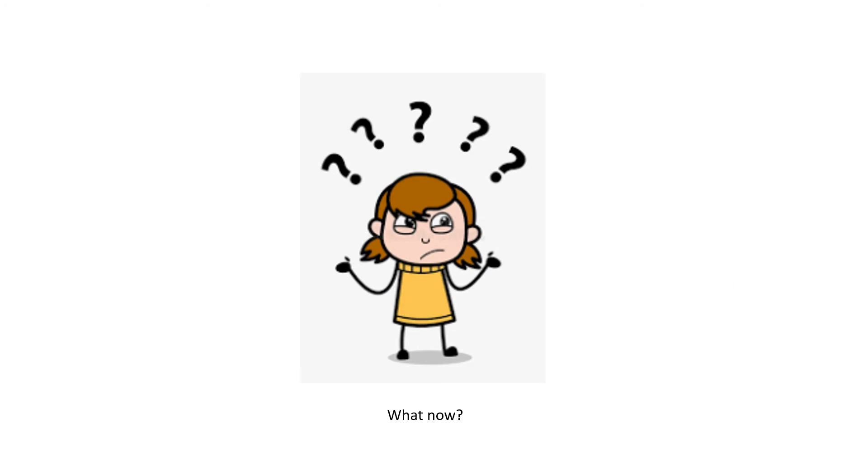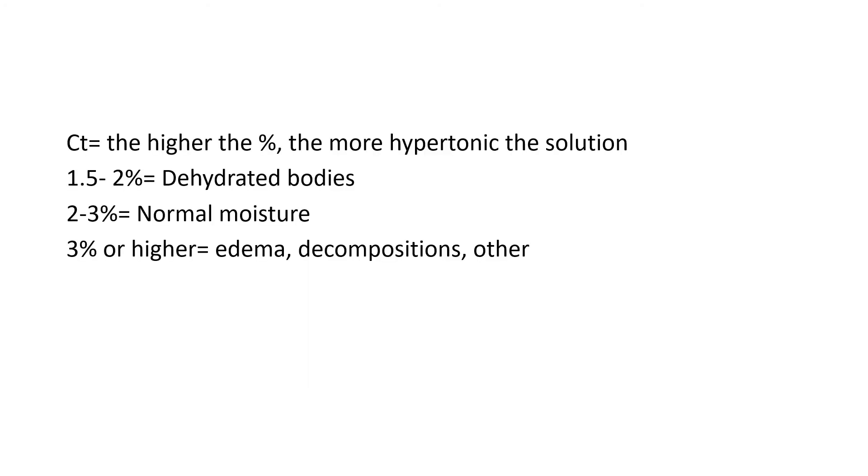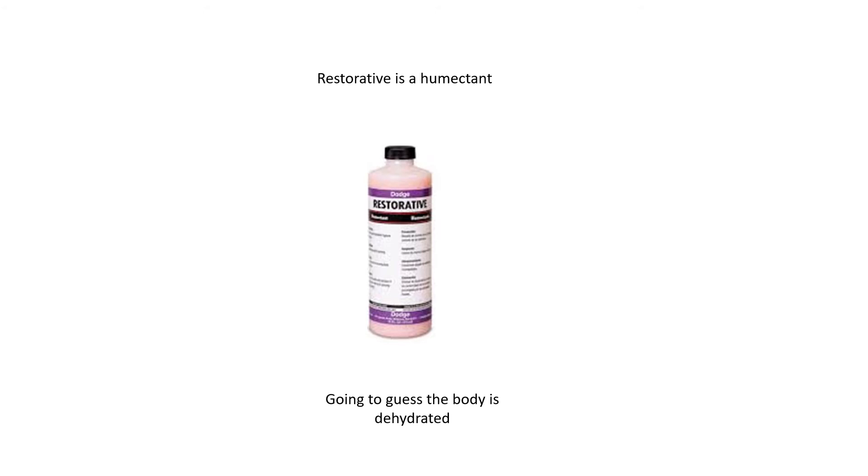So what do we do now? We also have to set the CT, the percent strength of the solution we are making. So kind of as a baseline, 1.5 to 2% strength are for dehydrated bodies. Two to 3% are usually assigned to bodies of a normal moisture content. And 3% or higher are for bodies that are edematous, in decomposition, or other delayed embalming situations. Based on our supplemental fluid choice of Restorative, which is a humectant, we're going to guess that the body is either dehydrated or of basic normal moisture.